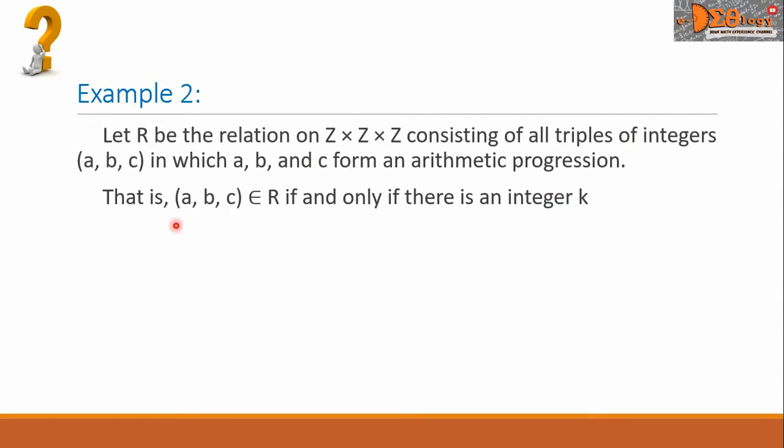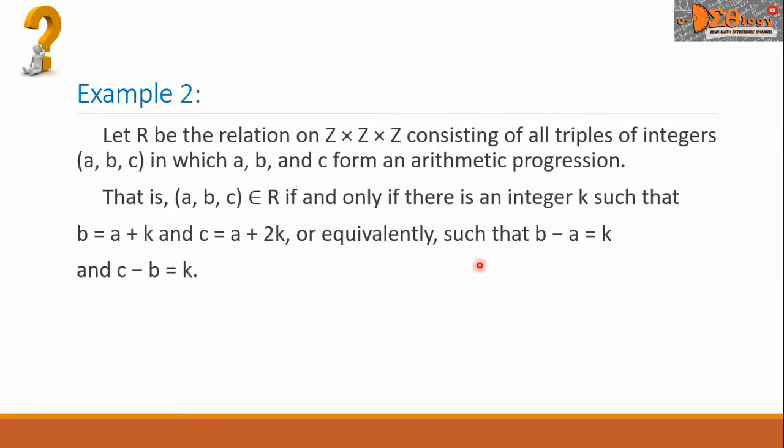That is, A, B, C is an element of R if and only if there is an integer K such that B equals A plus K and C equals A plus 2K. Or equivalently, such that B minus A equals K and C minus B equals K.